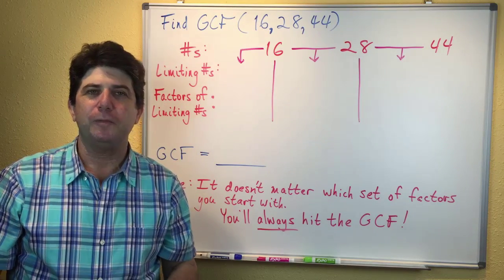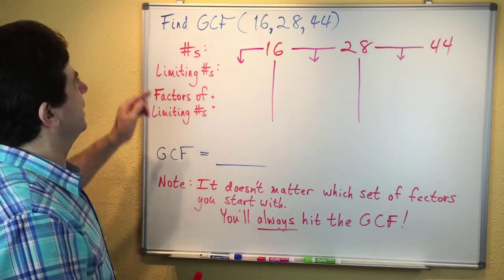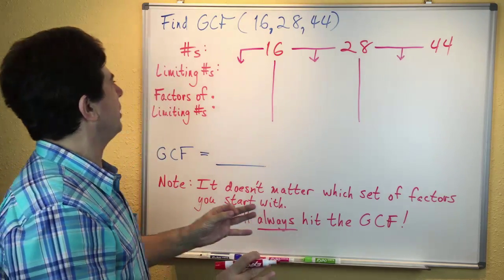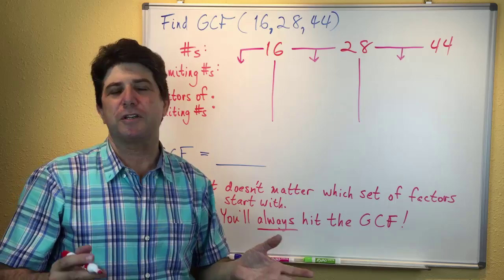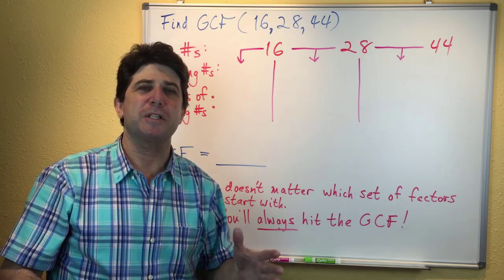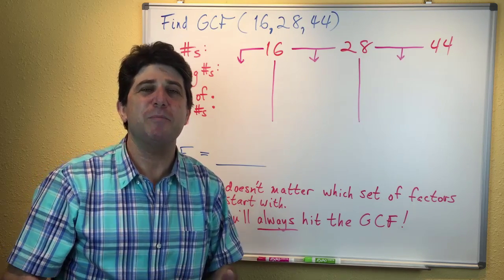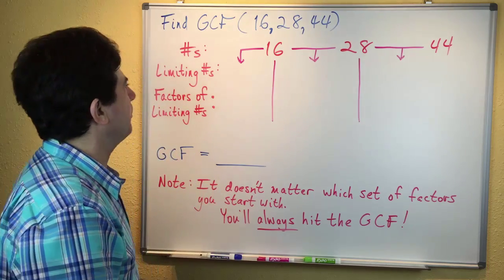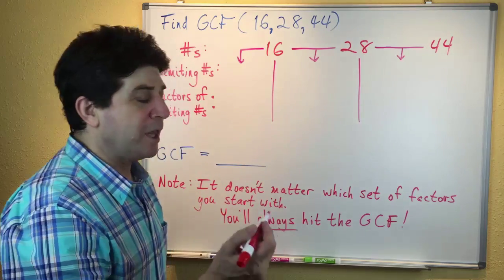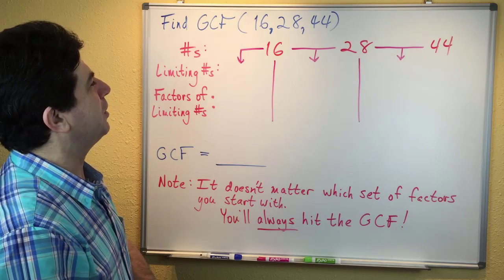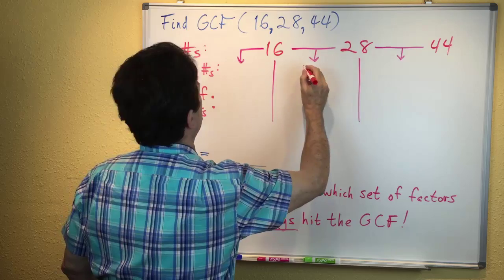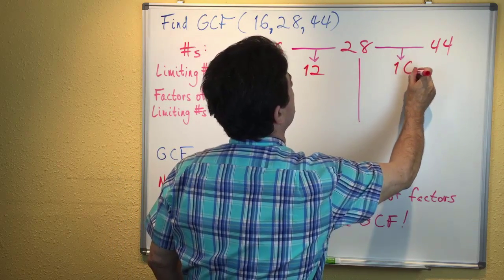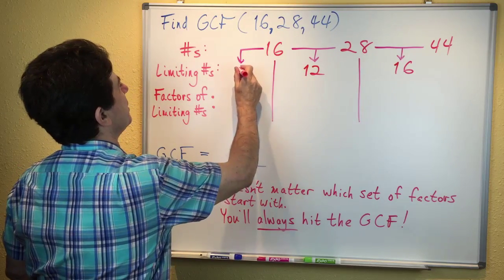Now we're going to do an example that will make this all make perfect sense. The problem is to find the GCF for 16, 28, and 44. The term limiting numbers means either the gap numbers or the smallest numbers. We write out our limiting numbers. The gap from 16 to 28 is 12, the gap from 28 to 44 is 16, and the smallest number is 16.